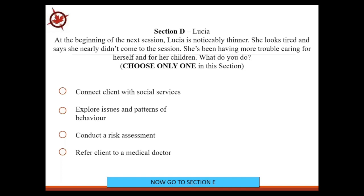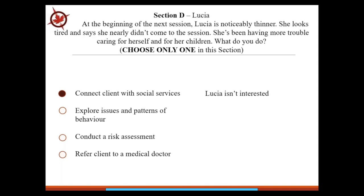At the beginning of this session, you notice that Lucia is noticeably thinner, she looks tired, she says she nearly didn't come, and she's been having more trouble caring for herself and her children. What do you do? You can only choose one. You could connect with social services, explore patterns of behavior, conduct a risk assessment, or refer her to a medical doctor. If you select 'risk assessment,' you would never get to select any of the other items — they wouldn't be available to you. If you connect the client with social services and she says she's not interested, you can't choose another one. That's why it's so very important to look at the stem and figure out what it is you're selecting.